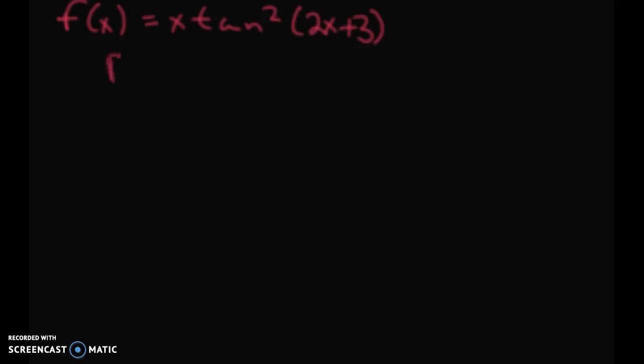It is a product rule. f(x) = x and g(x) = tan²(2x+3). Let me change the color so we're not seeing all the same colors.